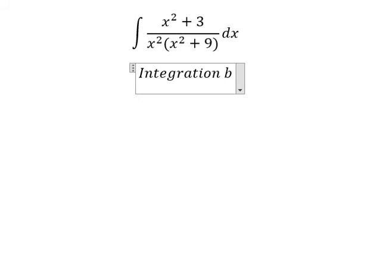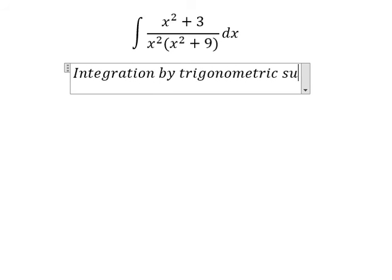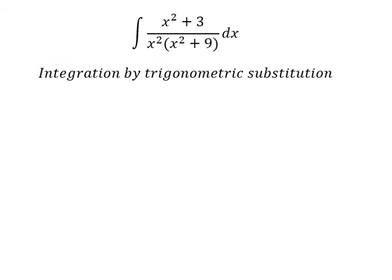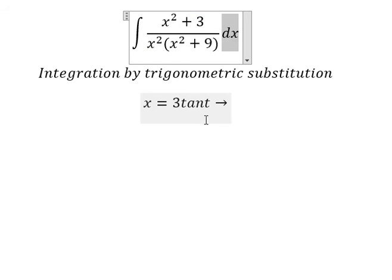For integration by trigonometric substitution, I will put x equals to 3 times tan t. The reason I need to put this one is because if we put it in here, you get about 9 times tan squared t. With the number 9, we can do factorization. After we do factorization, we change it to secant t squared. For dx, we got secant t squared after we do the first derivative, so we can simplify this one.